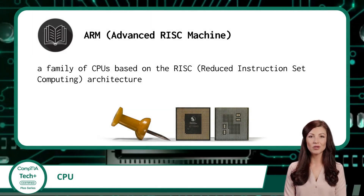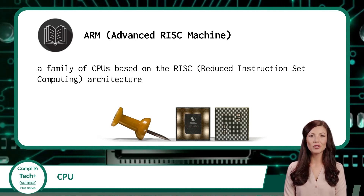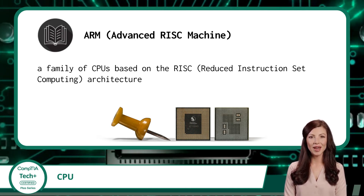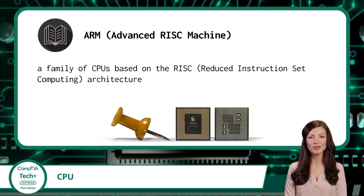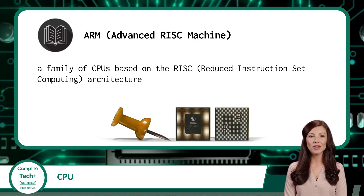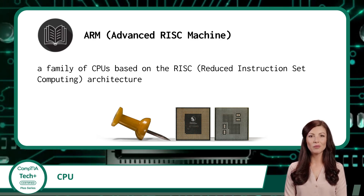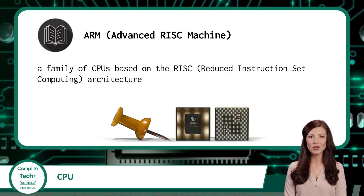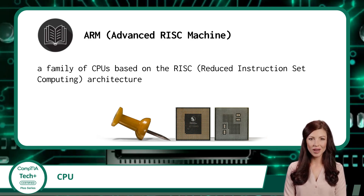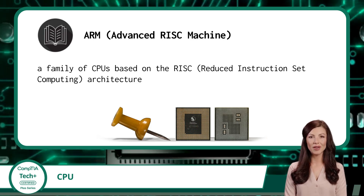Not all processors are created equal. While most laptops, desktops, and servers use powerful, high-performance CPUs, mobile devices like phones and tablets often rely on a different kind of CPU called an ARM processor. ARM stands for Advanced RISC Machine, and it's built on what's called a reduced instruction set computing, or RISC, architecture. These processors are designed to be smaller, more energy efficient, and generate less heat, which is perfect for compact devices that run on batteries.